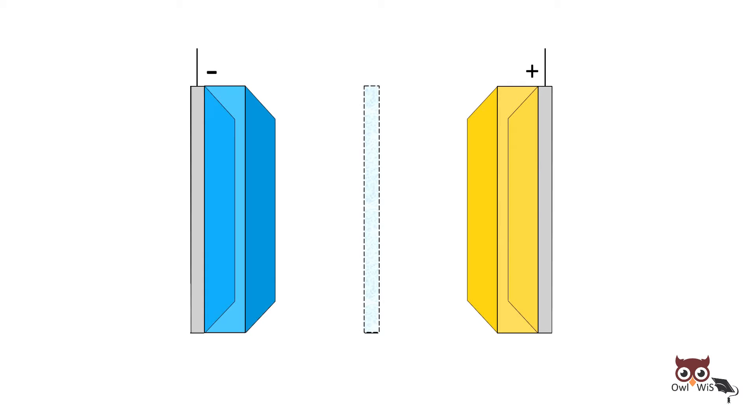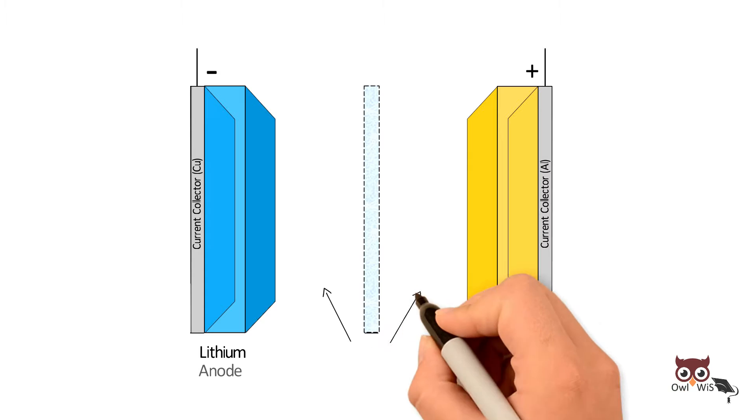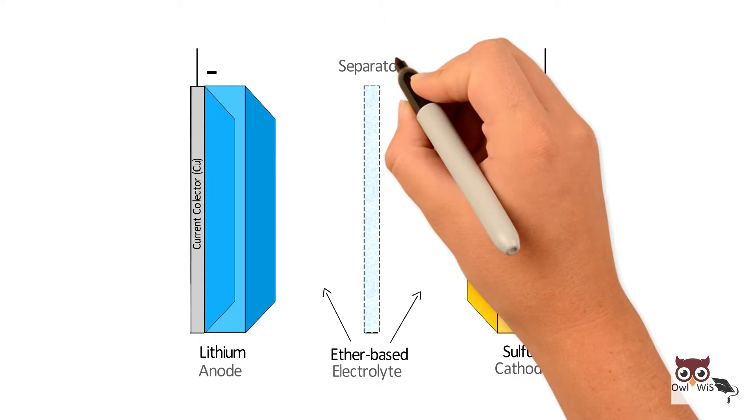Lithium Sulphur battery has a solid lithium-metal anode, a sulfur cathode, ether-based electrolyte and separator.